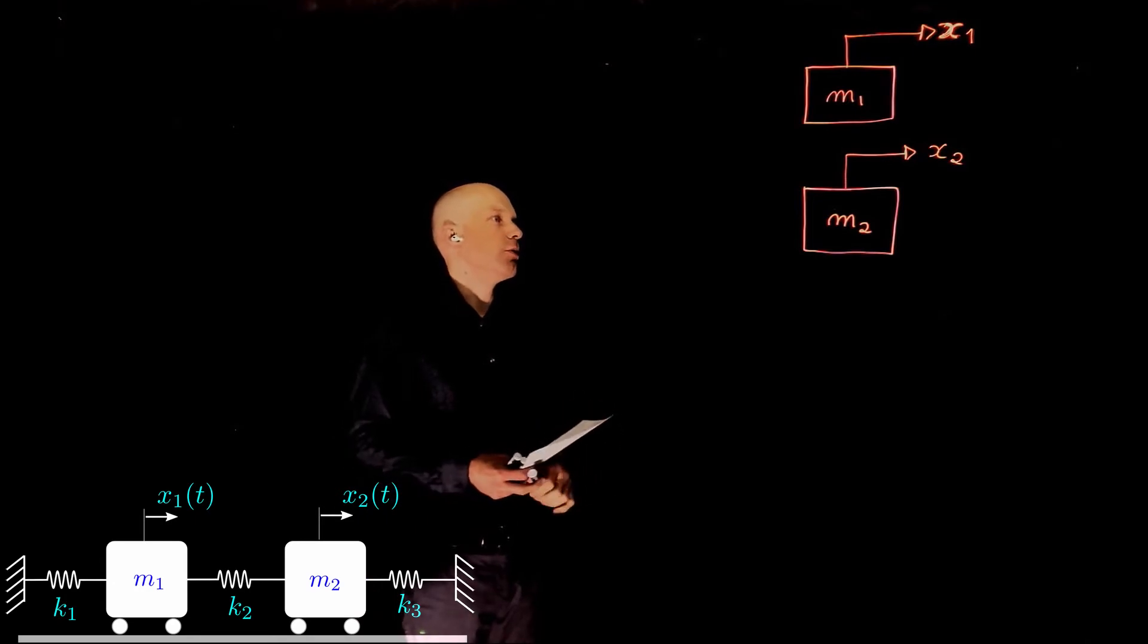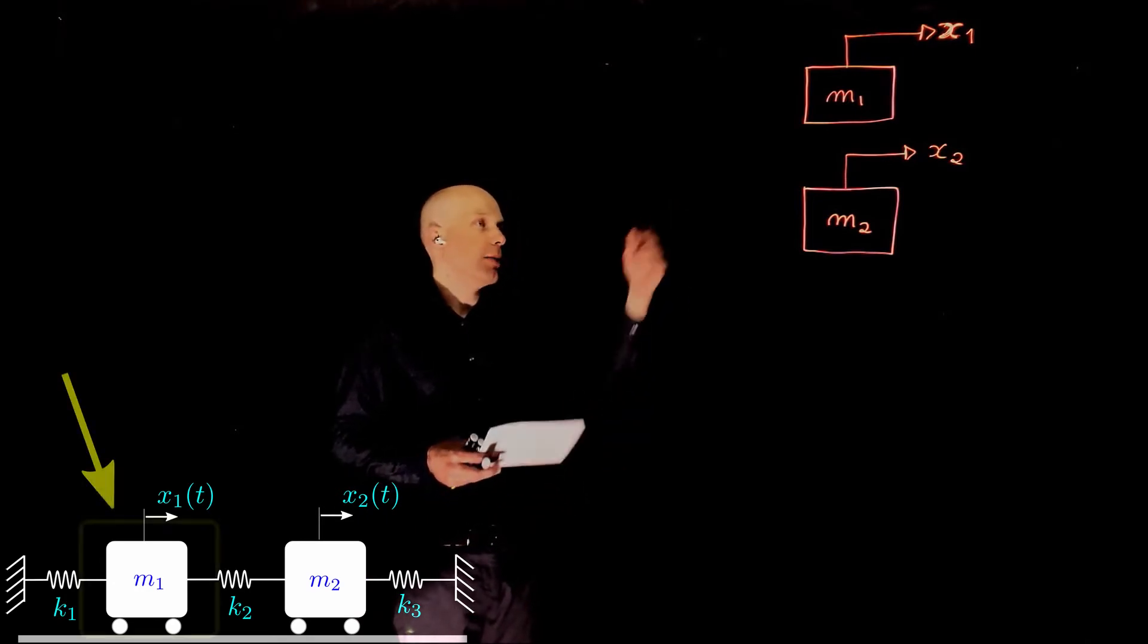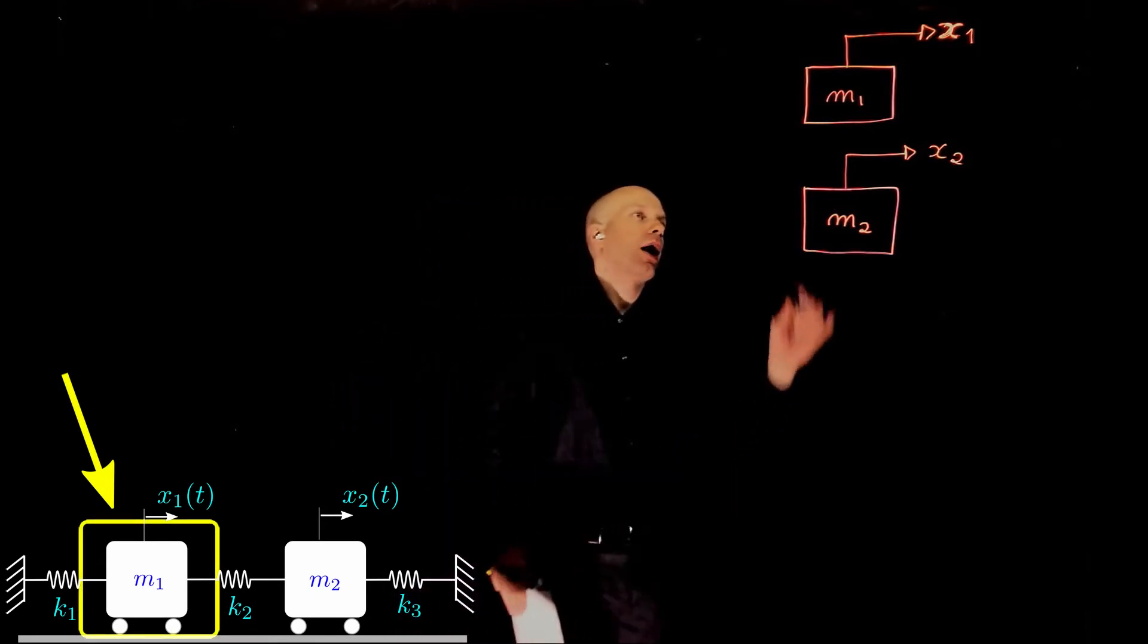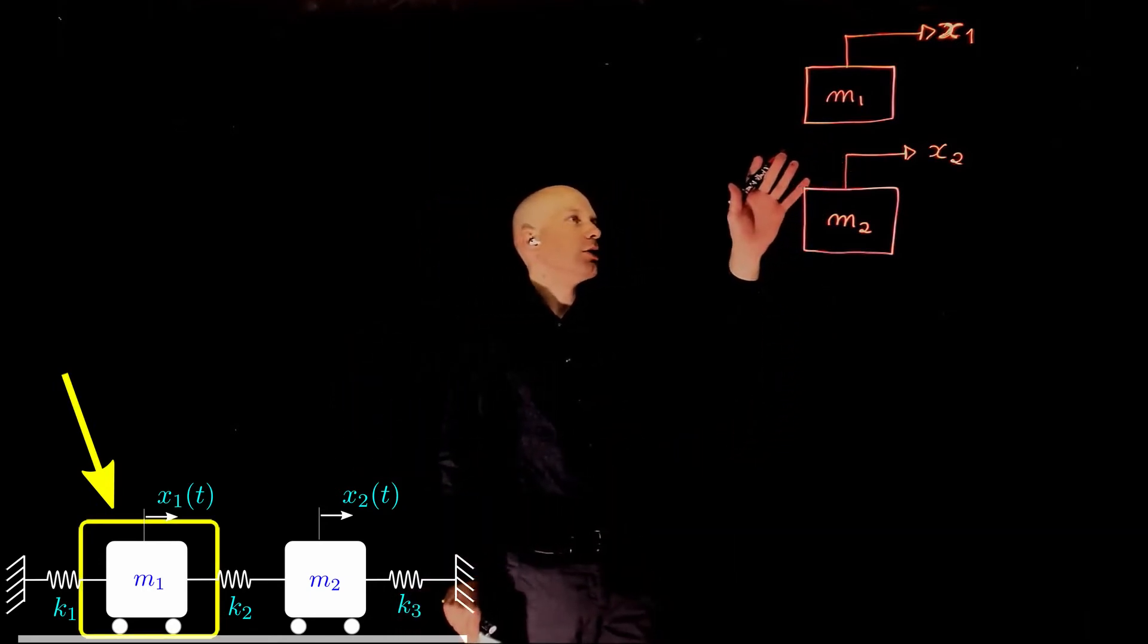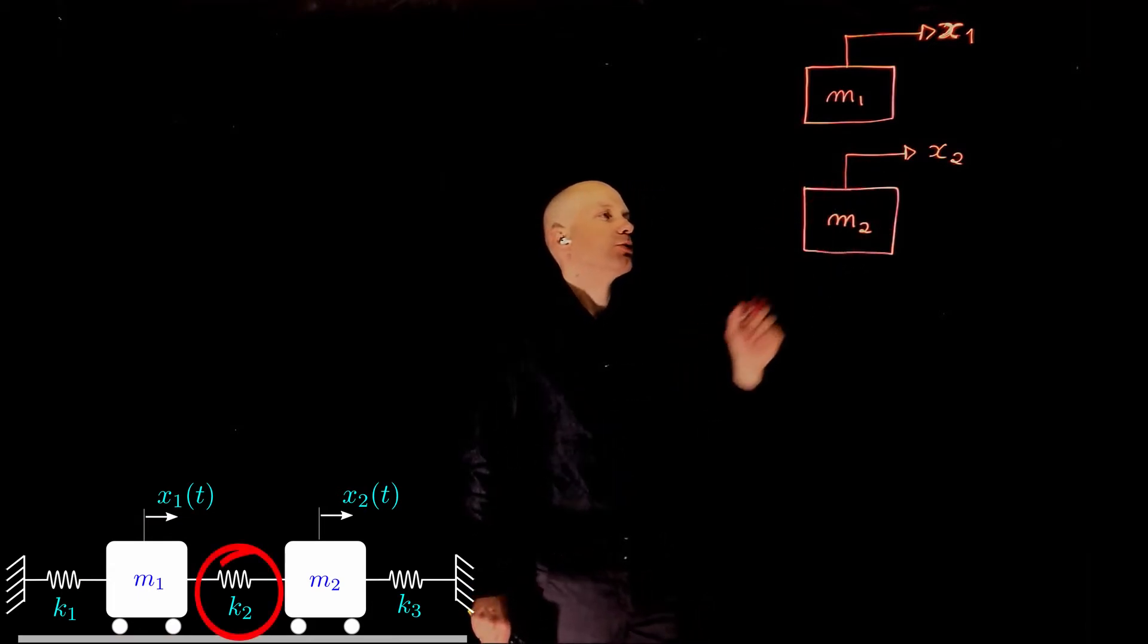And now we can proceed to the free body diagram. Let's start with mass m1. Mass m1 is being now pulled by the spring that connects m1 and m2.